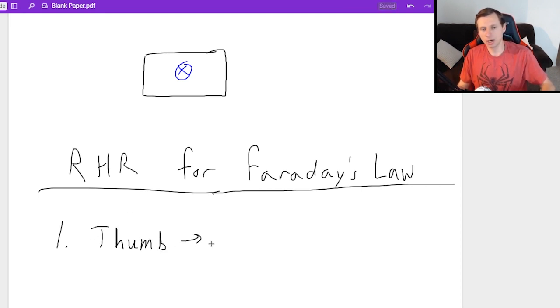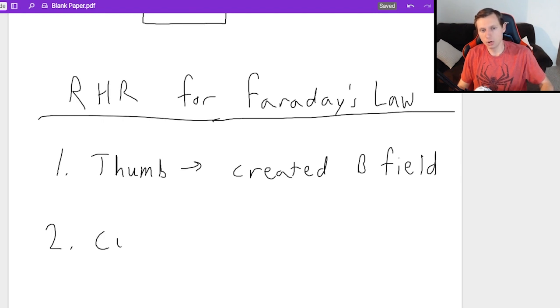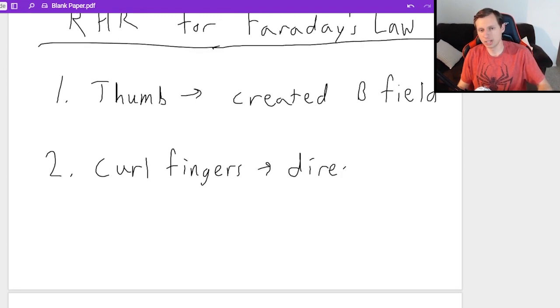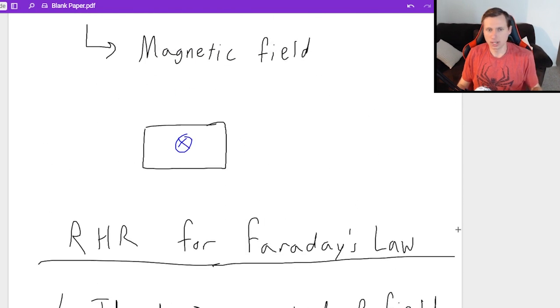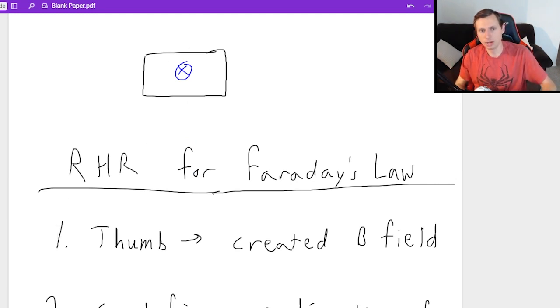So basically your thumb points in the direction of your created magnetic field, your created B field. That means for this example, your thumb is pointing into the page because that's the symbol for into the page. And then two, all you got to do is curl your fingers and congratulations, you just found the direction of the current, which is what we wanted. So here's what I'm going to say for that. Looking at this example, my thumb points into the page because that's the direction of the created magnetic field. Curl my fingers. Looks like my fingers are curling clockwise. Might be backwards because of the camera for you, but it is going to be clockwise. So the current points clockwise.